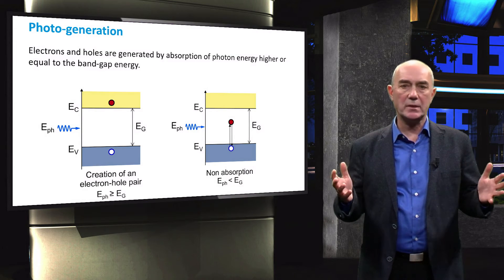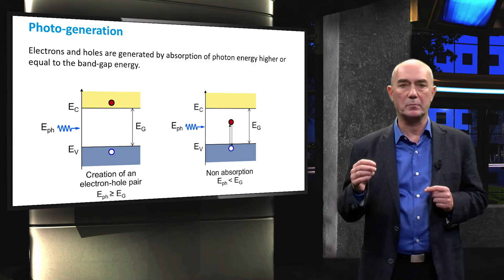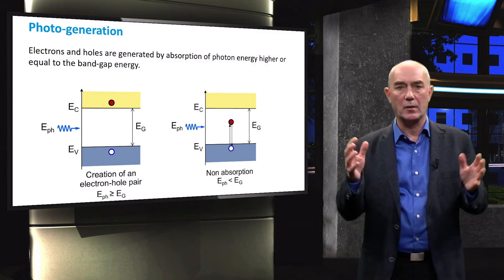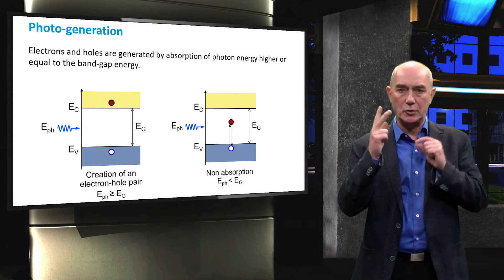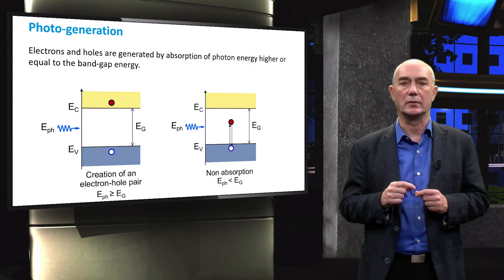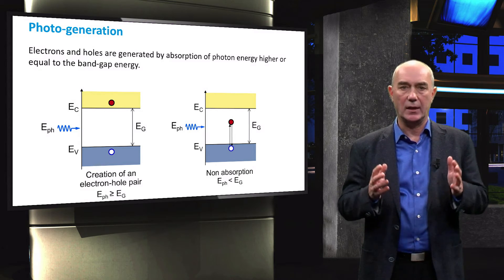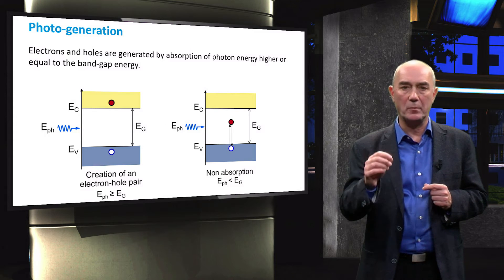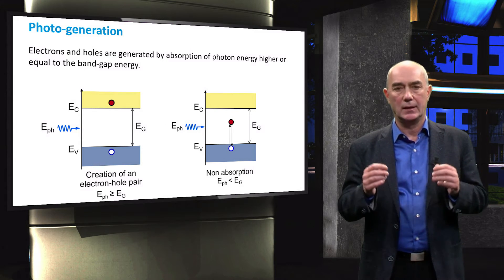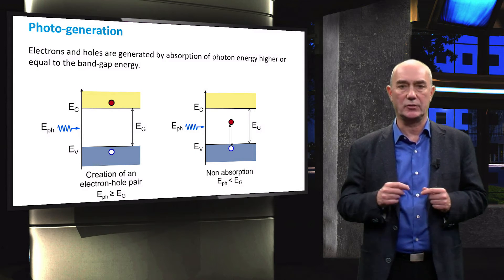In most semiconductors, the atoms are kept together by covalent bonds. The covalent bond is formed when two atoms share two electrons, each atom contributing with one electron. We call these electrons valence electrons and they are immobile while forming a bond. The energy states of valence electrons are in a valence band of allowed energies.